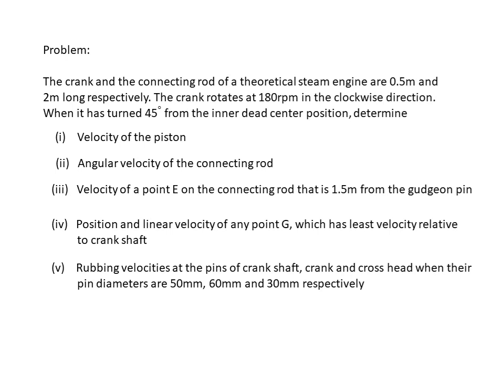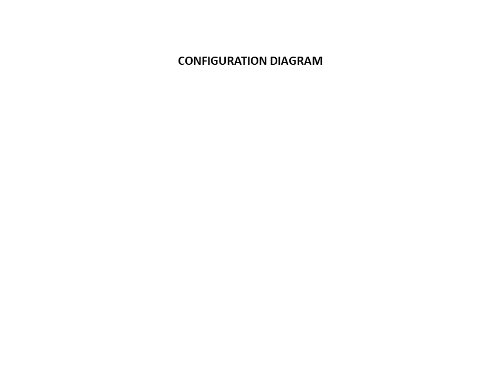The first step in any of these problems is to draw the configuration diagram. Let us look at the dimensions and create it. First, draw the fixed point. For any diagram — whether it is a configuration diagram, velocity diagram, or acceleration diagram — it always starts from the fixed point. In our case, the fixed point is the center bearing. Let us name it O. To O, the crank is connected. The connecting rod is connected to the crank, and the connecting rod is connected to the piston.